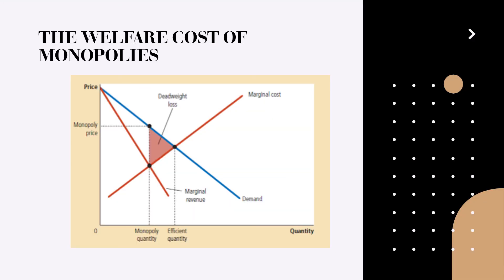Now let's also discuss the implications of monopoly pricing for social welfare. Because monopoly charges a price above marginal cost, not all consumers who value the good at more than its cost buy it. Thus the quantity produced and sold by monopoly is below the socially efficient level. And thus the deadweight loss is represented by the area of the triangle between the demand curve and the marginal cost curve.